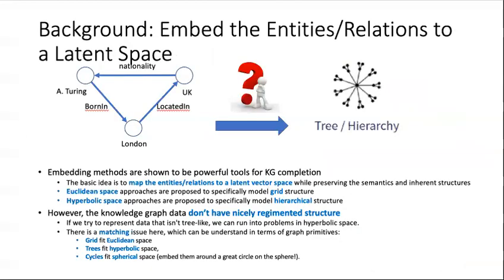The embedding methods are shown to be powerful for KG completion. The basic idea is to map the entity and relation to a latent vector space while preserving the semantic and inherent structures. Either Euclidean space approaches proposed to specifically model the grid structure, and hyperbolic space approaches proposed to specifically model the hierarchical structure.